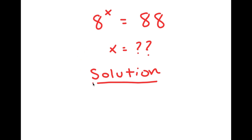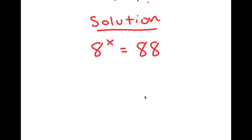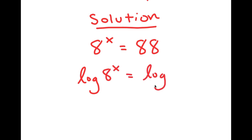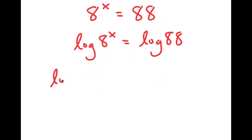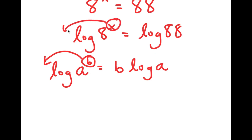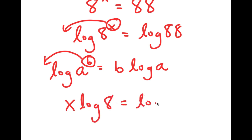I'm going to first start by rewriting my equation down here so I have a little more solving space. My equation is 8 to the power of x is equal to 88. I'm going to start by taking the log on both sides, so I get log of 8 to the power of x is equal to log of 88. Using the property that log of a to the power of b equals b times log a, I can move x to the front, so I get x times log 8 is equal to log 88.